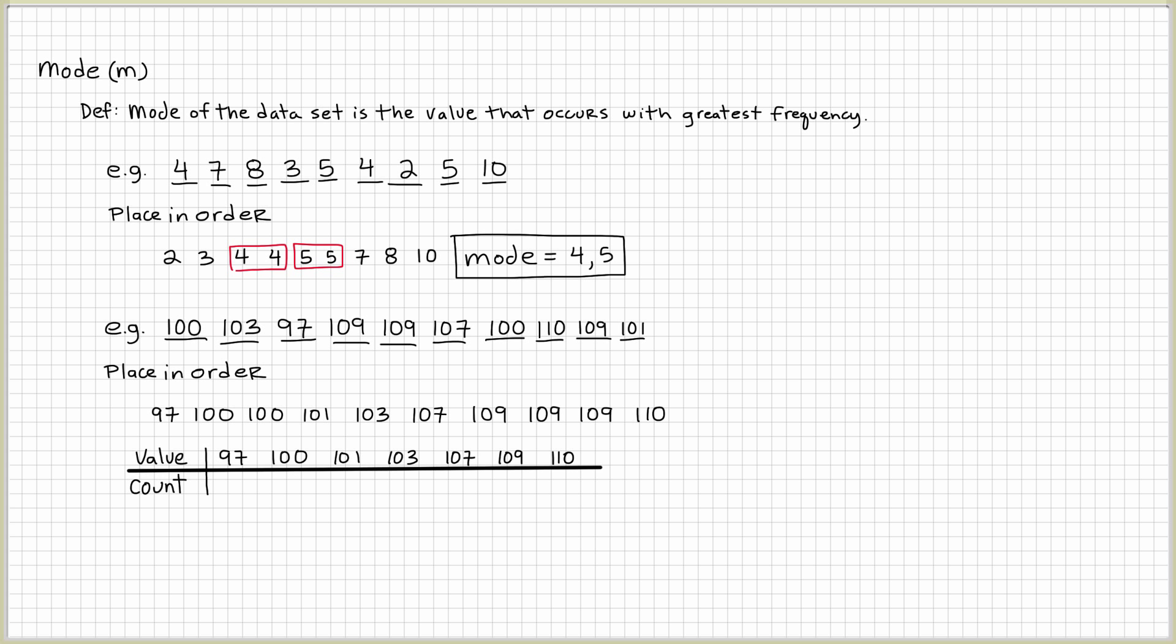How many 97s do we have? One. How many 100s? Two. How many 101s? One. How many 103s? One. How many 107s? One. How many 109s? Three. And how many 110s? One.